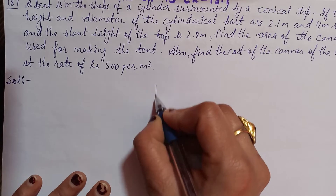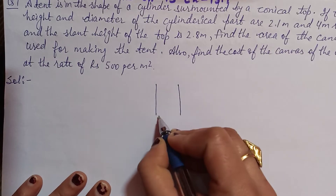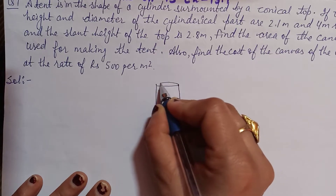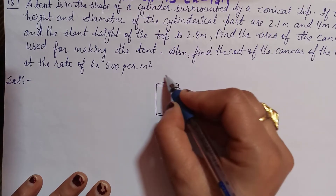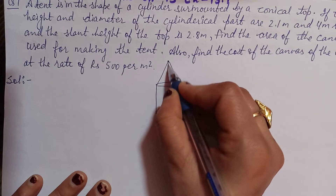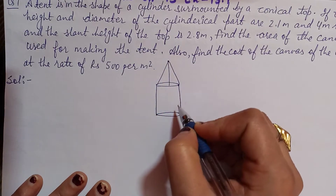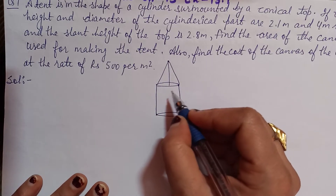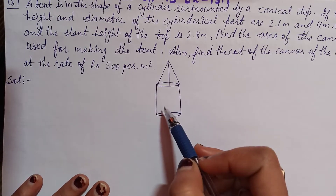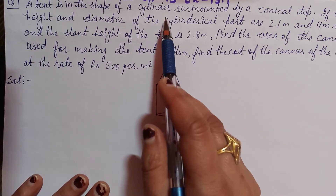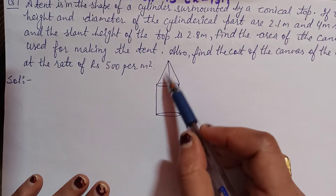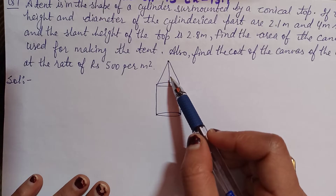First of all, beta, we have the cylindrical part. Next, it says surmounted by a conical top, so we take the conical top. The canvas is used on this part — cylindrical surmounted by a conical top. So the cylindrical part is surmounted by the conical top.